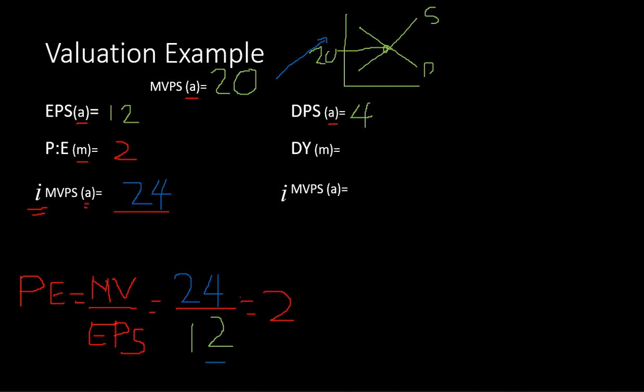Comparing the two: the stock is actually being traded at 20, but the intrinsic value is 24. The actual value is understated — the stock should be worth 24 but it's selling at 20. This is a good time to buy because it's cheap, like it's on sale. That's how you use these ratios to analyze the value of a stock.